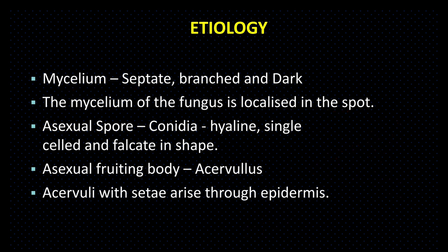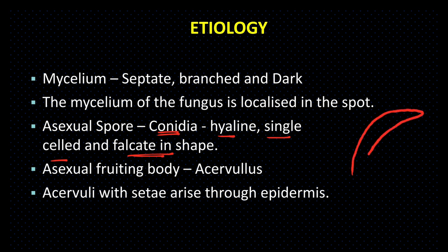Asexual spore is conidia. Conidia hyaline, single-celled और falcate in shape होता है — मतलब यह light color का, single-celled और थोड़ा curve होता है। इसे falcate in shape कहते हैं।